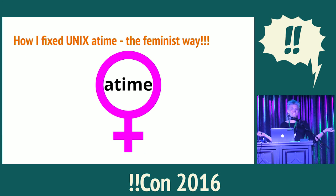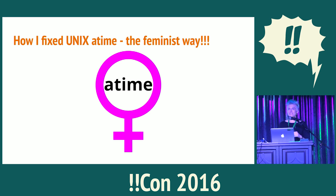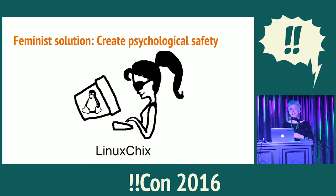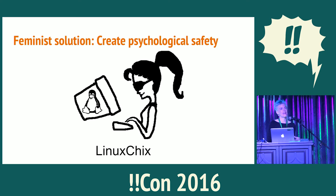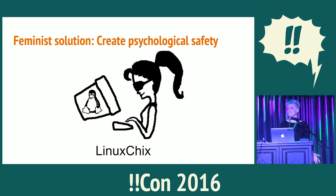Here's how I fixed Unix A-Time the feminist way. Remember, at this point it's 2006 — it's been 37 years that people have been trying to fix this problem. The first thing I did is I went to a place that had psychological safety. In 2006, this was Linux Chicks, a group for women in Linux, and some of our rules were be polite and be helpful. It was amazing because we could have technical discussions without people sneering at each other for their weak use of A-Time.